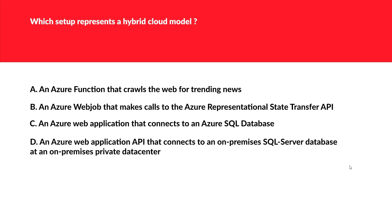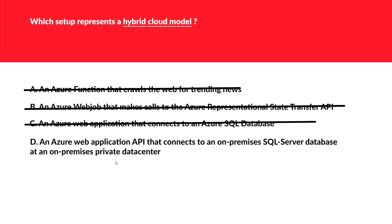The next question: which setup represents a hybrid cloud model? An Azure function that crawls the web for trending news — not hybrid; this is public cloud deployment. An Azure web job that makes calls to the Azure REST API — again, not hybrid; this can be private cloud or on-premise. An Azure web application that connects to an Azure SQL database — this is public cloud, not hybrid. An Azure web application API that connects to an on-premise SQL Server database at an on-premise private data center — yes, this is a hybrid cloud model. So this is the correct option.